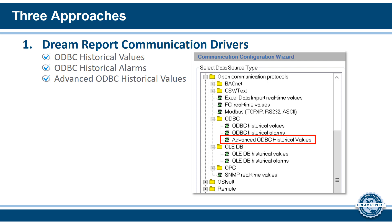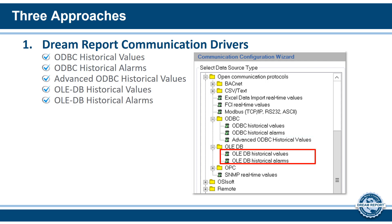Direct and OLEDB-based connections in addition to ODBC connections are supported, along with the ability to build or use your own custom SQL views on the data. We also provide a visual query builder to help you build the query, and create separate queries for tag name browsing and the data queries. The OLEDB historical values and historical alarms drivers use an OLEDB connection to map into a table or view in your database, requiring no external ODBC data source name to be created.